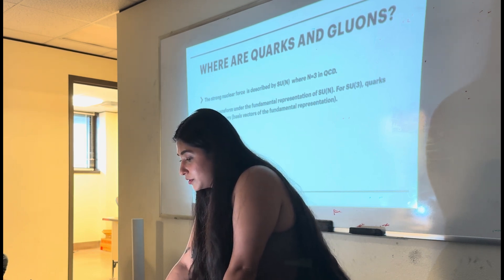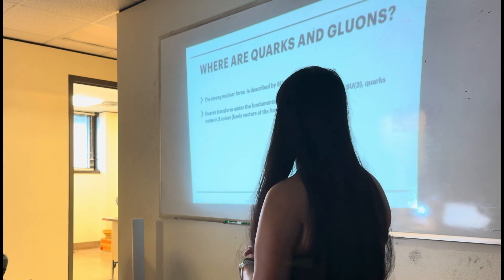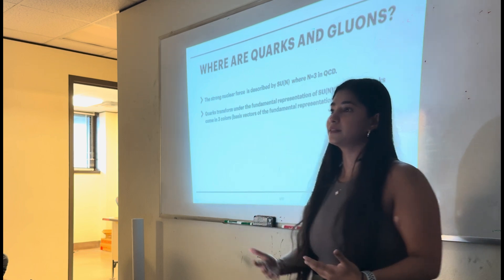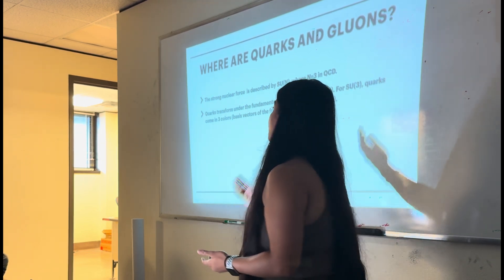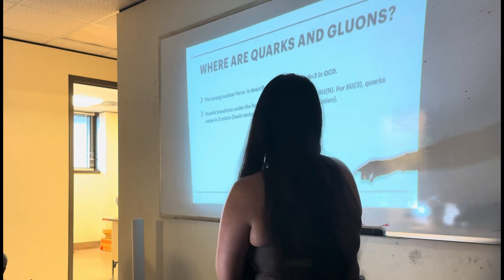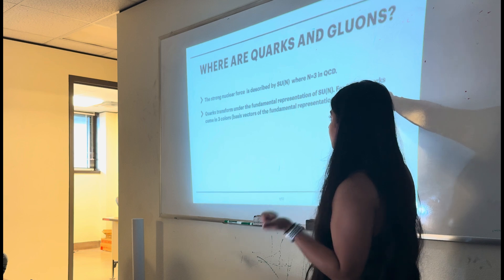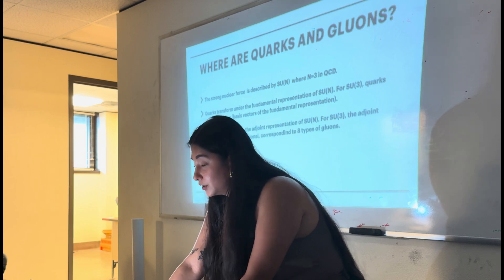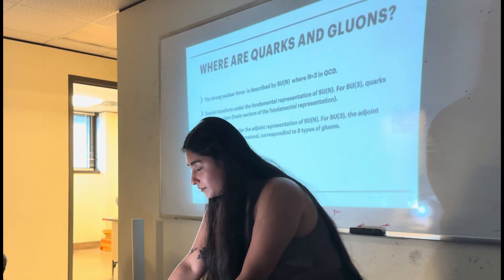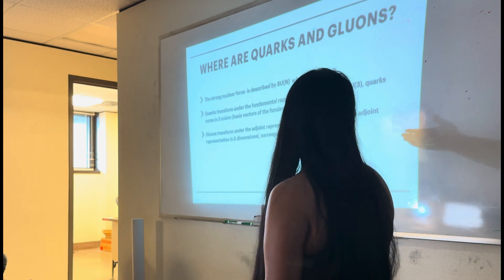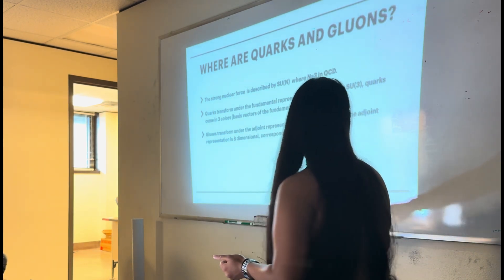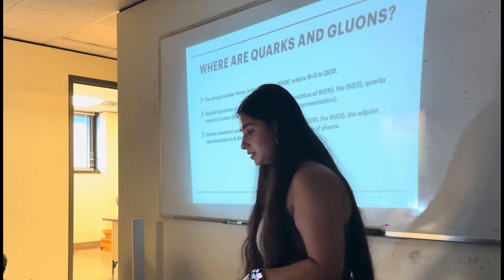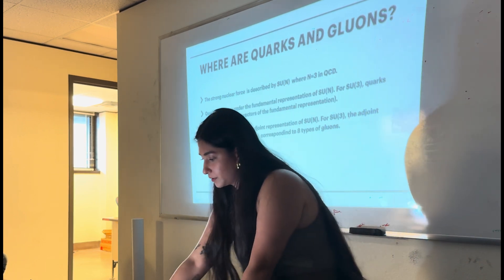As we know that the strong nuclear force is described by SU(N), and in QCD, we have N equals 3. This N equals 3 corresponds to quarks, which transform under the fundamental representation of SU(N), the fundamental representation of SU(N) just acts on the vectors of, the N-dimension vectors of the group. So, for QCD, since we have SU(3), which means we have three basic vectors given by quarks, which come in three colors. On the other hand, gluons transform under the adjoint representation of SU(N). Adjoint representations act on the generators of the group. So, if we have three here, the generators become N squared minus one, which is eight, so eight generators, and we all evidently know the eight types of gluons.